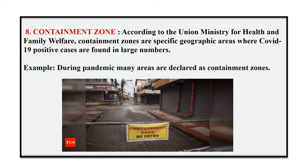Eighth one: containment zone. According to the Union Ministry for Health and Family Welfare, containment zones are specific geographic areas where COVID-19 positive cases are found in large numbers. Example: during the pandemic, many areas are declared as containment zones.